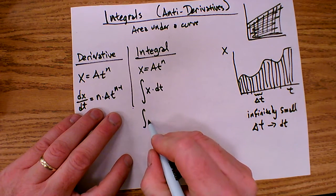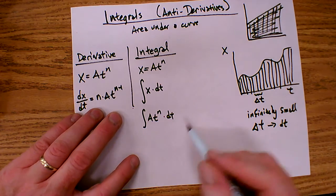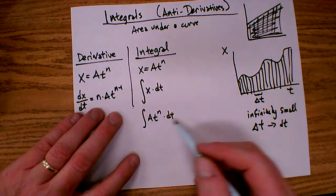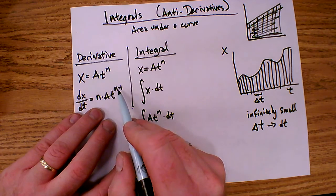So how to do the integral? I have the integral of my function at to the n dt. What I'm going to do then is I'm going to do the exact opposite of the derivative. Now the derivative, remember, first thing we did was bring the exponent down and multiply, and then we reduced it by 1.